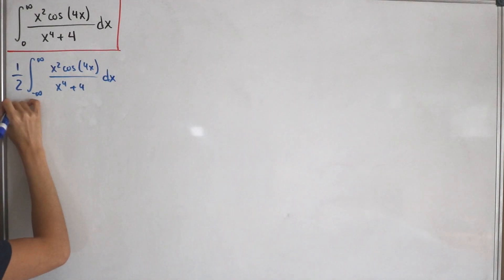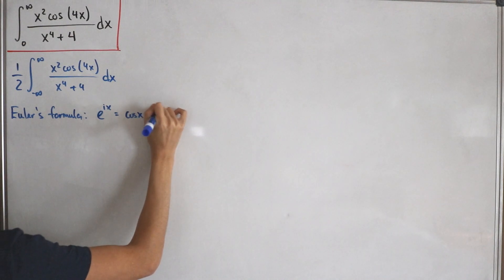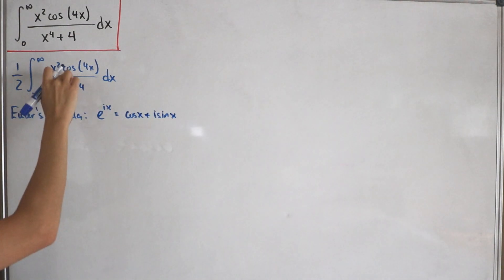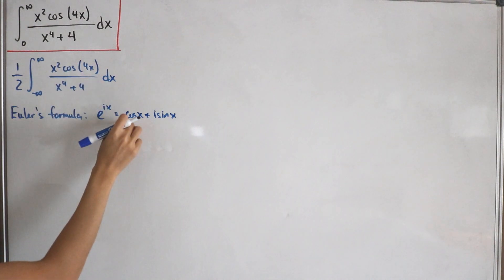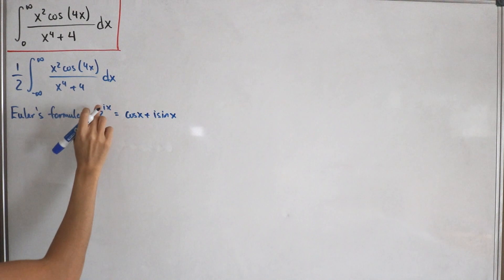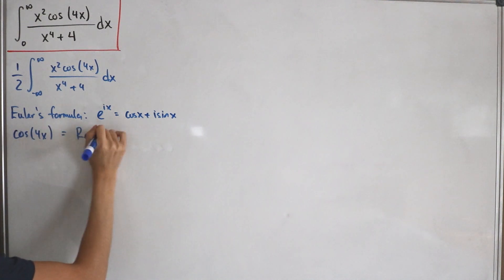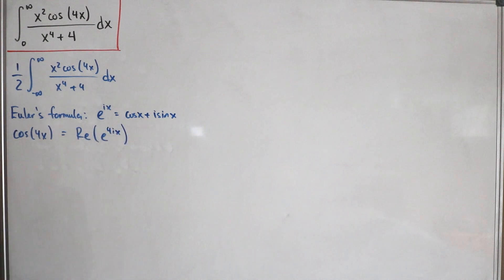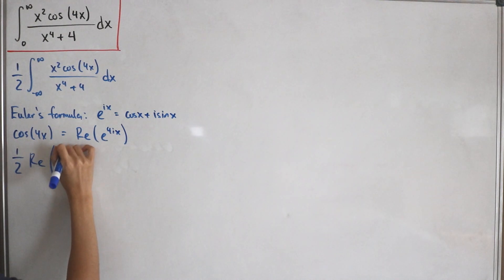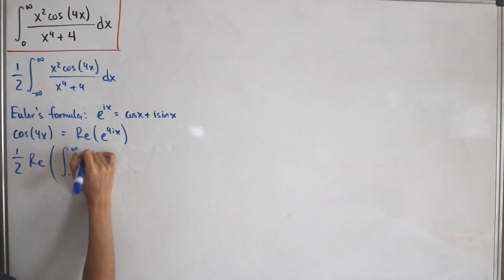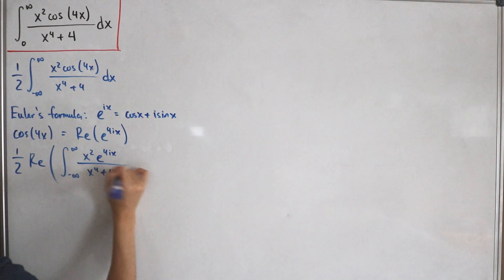We'll apply Euler's formula: e to the power ix equals cosine of x plus i times sine of x. The cosine of 4x equals the real part of e to the power 4ix. So we substitute this in, and what we need to calculate becomes one half times the real part of the integral from negative infinity to positive infinity of x squared times e to the power 4ix divided by x to the power 4 plus 4, dx.